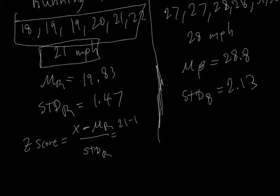And so we have 21 subtract 19.83 divided by 1.47. And when we work that out, that comes up to 0.7925.